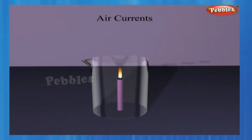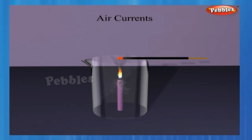Place a candle in a beaker or wide-mouthed bottle and light it. Light an incense stick and take it to the mouth of the above bottle. Which makes the smoke flow when the incense stick is kept near the edge of the mouth? It flows towards the beaker.